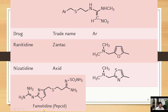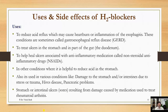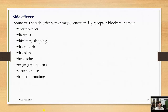Uses of H2 blockers include: reducing acid reflux, which may cause heartburn or inflammation of the esophagus (gastroesophageal reflux disease); treating ulcers in the stomach and gut; treating ulcers associated with NSAIDs; and other conditions where reducing stomach acid is helpful, such as stress- or trauma-induced damage to the stomach and intestine, hives, pancreatic problems, and medication-induced intestinal ulcers including those in rheumatoid arthritis treatment.